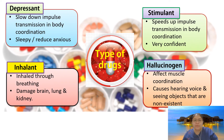There are four types of drugs. The first one is depressants. Depressants slow down your impulse transmission and body coordination, meaning your actions become slow. You feel sleepy and your anxiety is reduced — you become more relaxed.